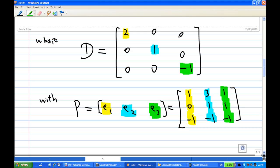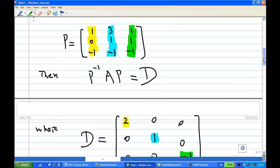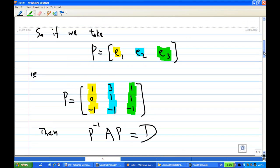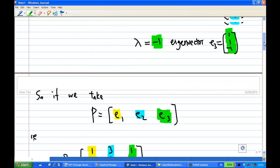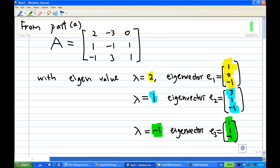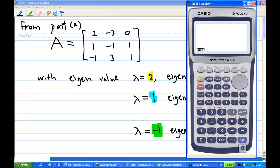Now, I can call up the calculator to verify that P inverse AP is equal to D. So, let me call my calculator to do the calculation for you. So, I call up the calculator. Now, I am in the calculation mode now.